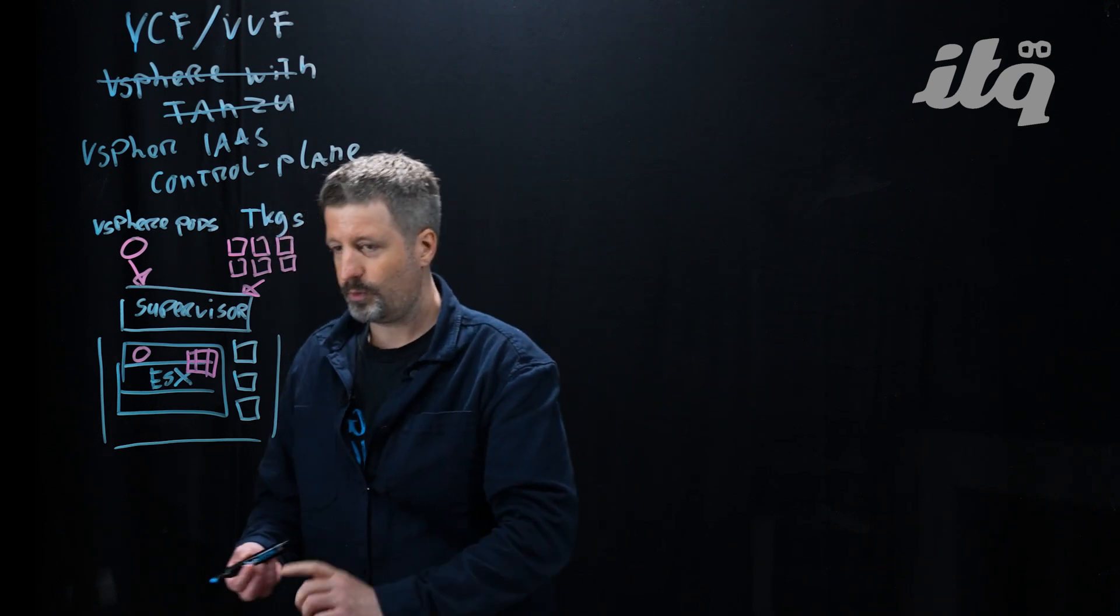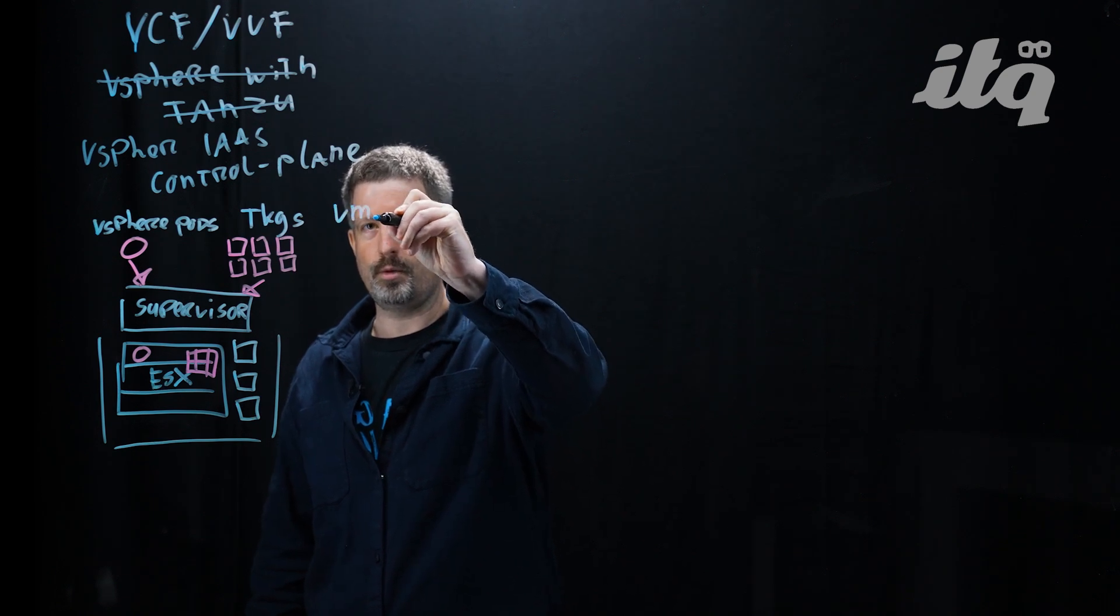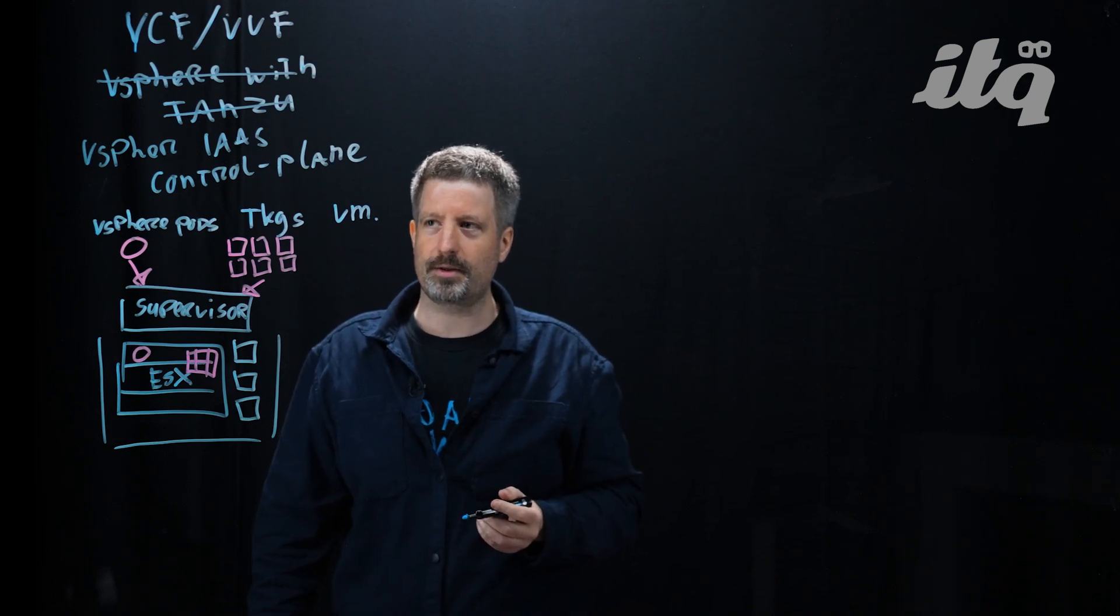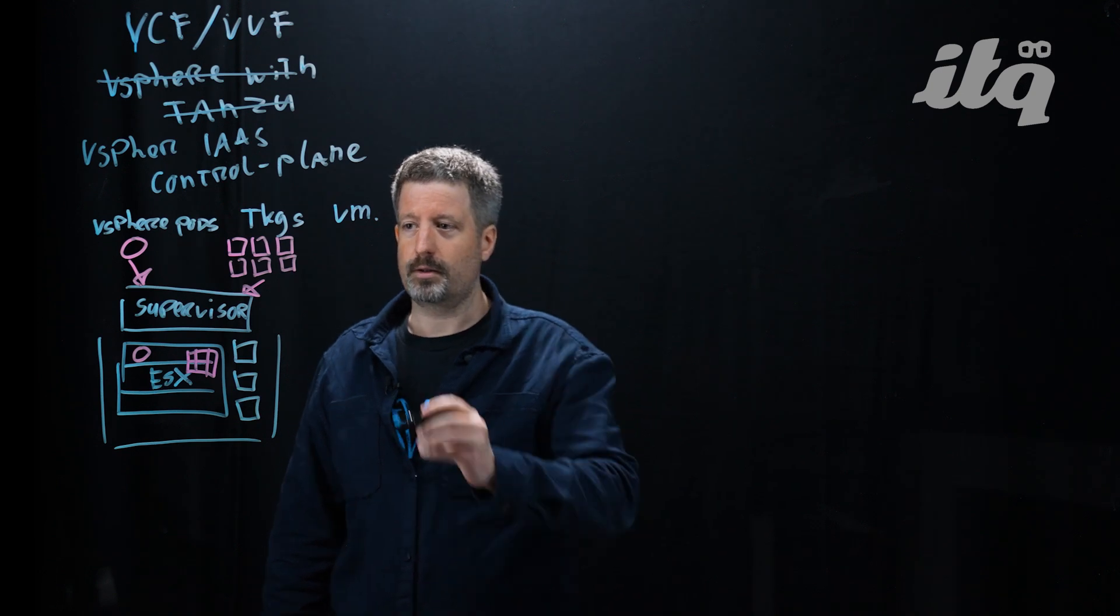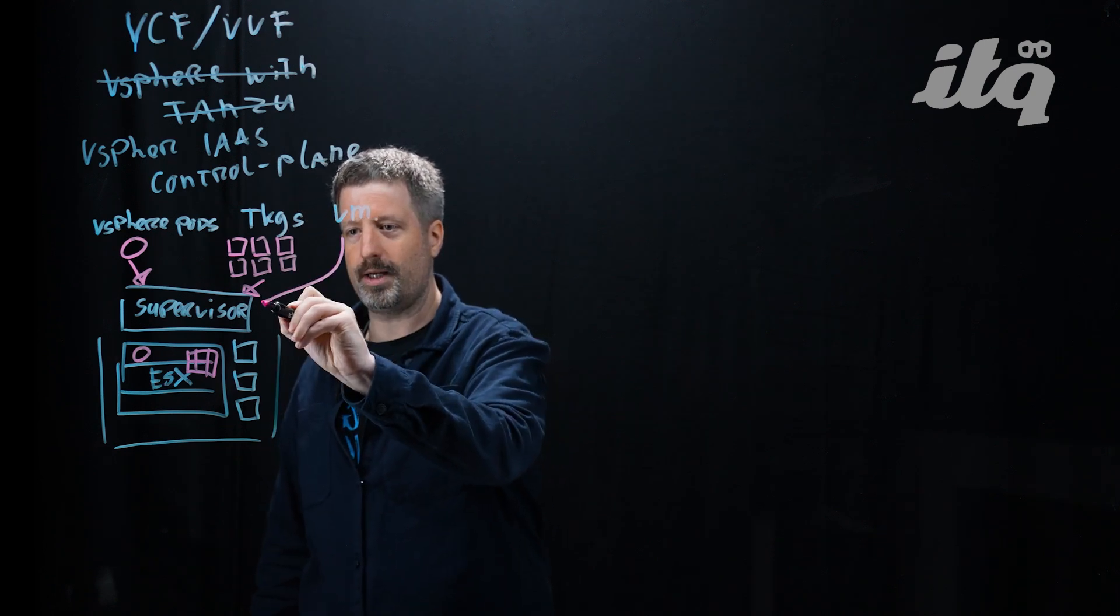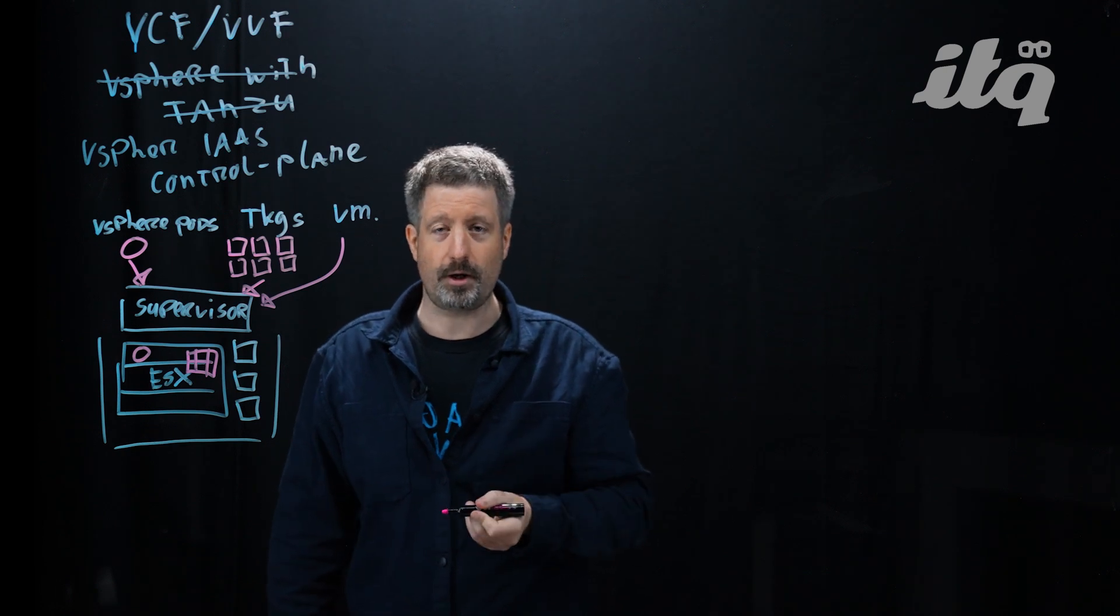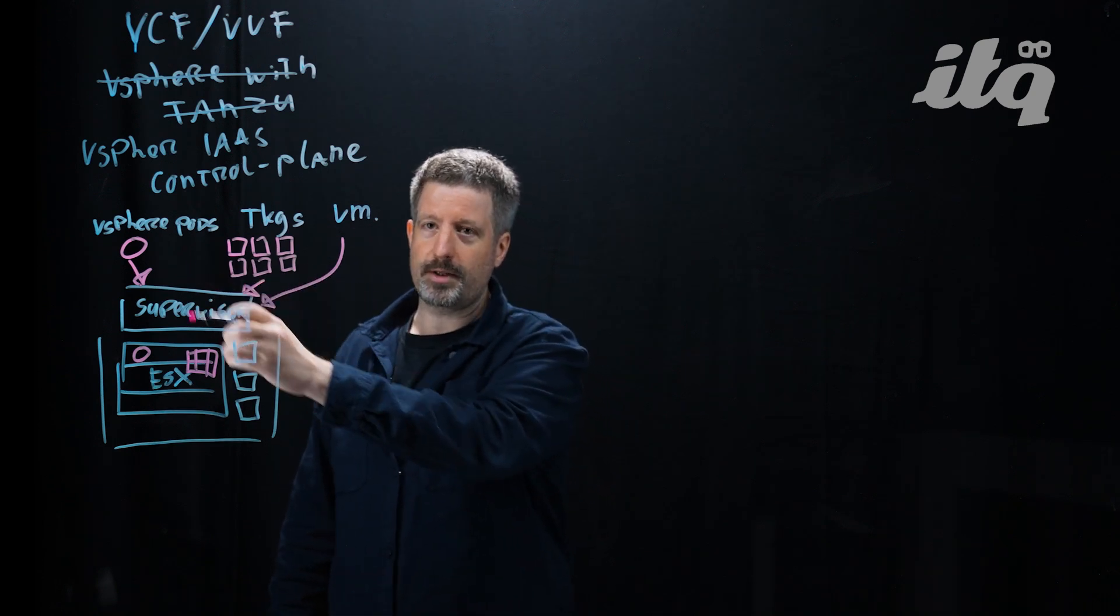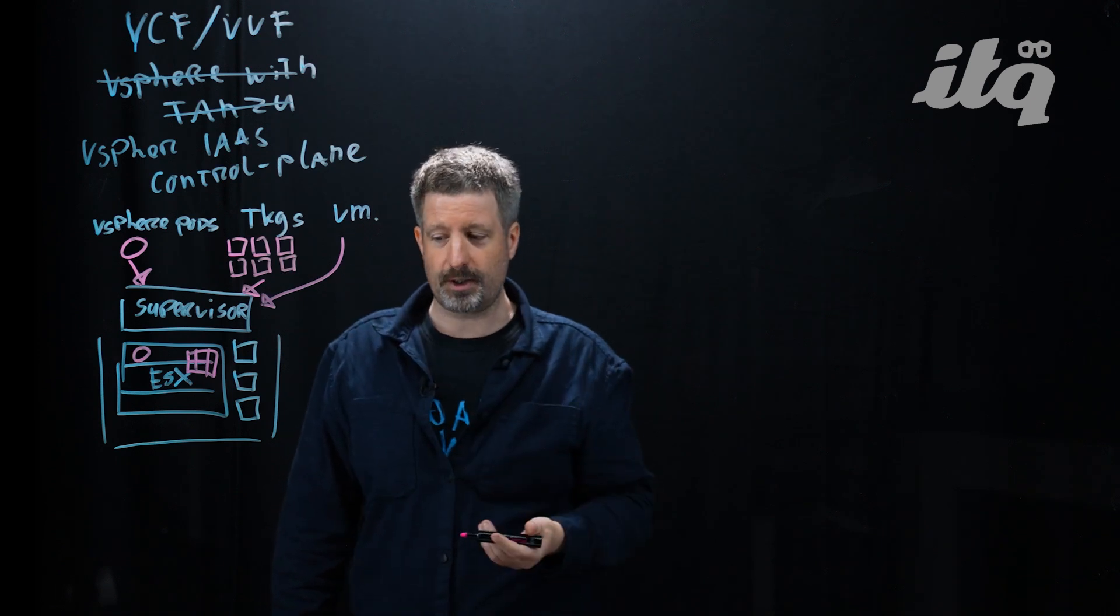And finally, what we can also do with the supervisor is something we're already quite familiar with. We can run VMs. Now, of course, we can already do this with vSphere. What's new about this? What's new about this in vSphere U3 is that you can use the supervisor to define a VM in a Kubernetes native way. This allows you to use the same infrastructure as code and GitOps practices to run both VMs, Kubernetes clusters, and individual containers and provision them to the supervisor, to the ES control plane in the same consistent way.